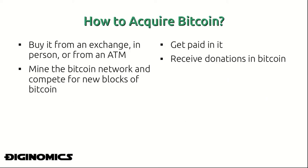So how does one actually acquire Bitcoin? We may know how to transact with Bitcoin, but if we don't have any Bitcoin we can't exactly move any money or interact with the network. The most common way is buying it outright, and you can do this by buying it on an exchange.